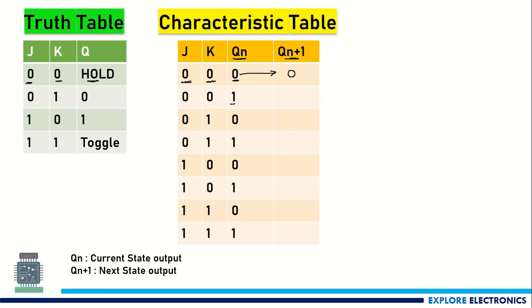Again, if the previous state of the output is 1 and J=0, K=0 is the input, it will be holding its state to 1 again. This is for the J=0, K=0 combination of JK values.